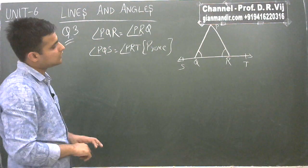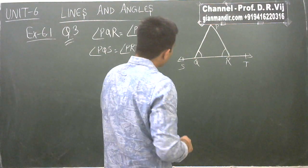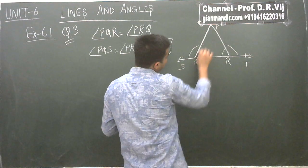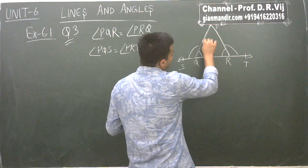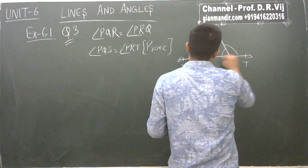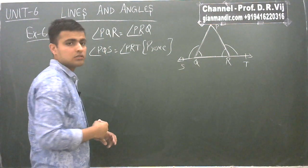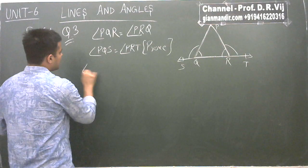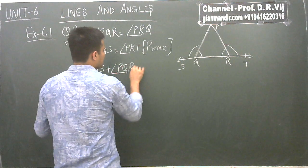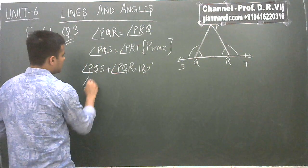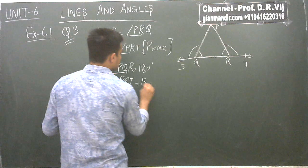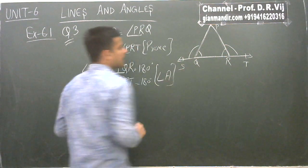How can we prove this? Angle PQS and angle PQR together, their sum equals 180 degrees because they are linear angles. Similarly, angle PRQ and angle PRT together also equal 180 degrees by the linear angle property. So we write: angle PQS plus angle PQR equals 180 degrees, and angle PRQ plus angle PRT equals 180 degrees.